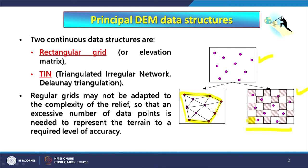Regular grids are not adapted to the complexity of relief. Whether it is a flat area or hilly terrain, the same size cells or pixels are used to represent the surface. But in TIN, it is adaptable to relief changes. Therefore, especially in highly rugged terrain, TIN better represents terrain ruggedness or relief compared to raster. We will be further examining this aspect.